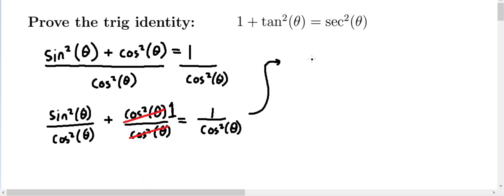And going over here, we're going to change the first term. So instead of sine squared over cosine squared of theta, we're going to recognize that that's the quantity sine of theta over cosine of theta, all squared.